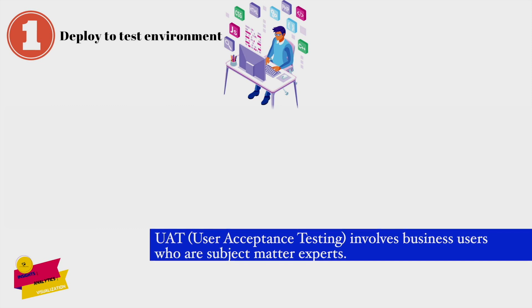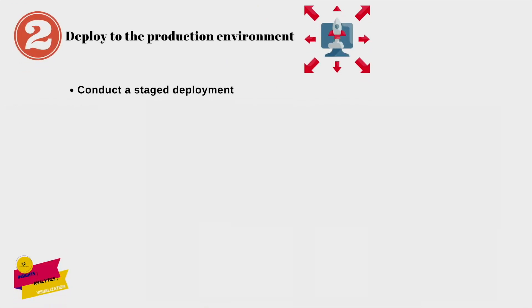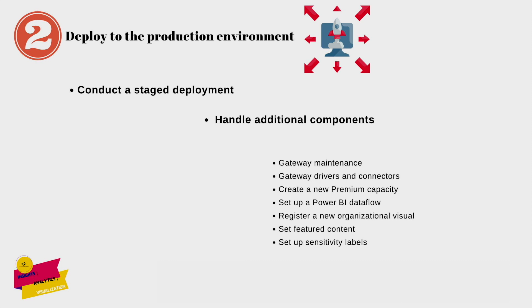Once verified, UAT participants provide their approval that new content is accurate, meets requirements, and may be deployed for wider consumption. The next step is deploying to the production environment. Always conduct a staged deployment — before moving to the final production environment, have a staging environment where you can validate reports. The staging environment is a mirror of your production environment. Here you also handle additional components such as gateway maintenance, gateway drivers, and connectors.